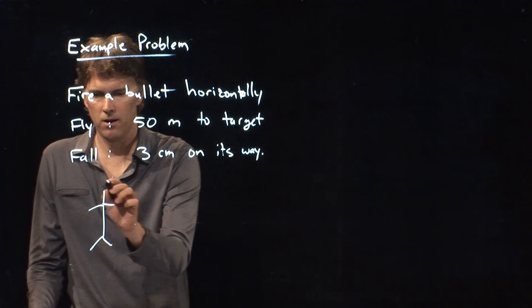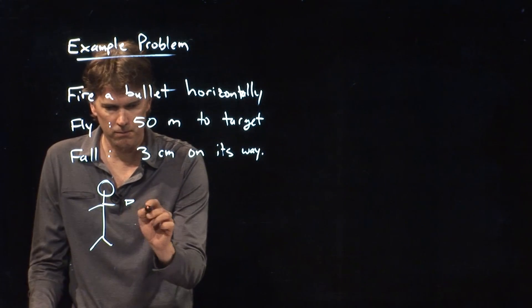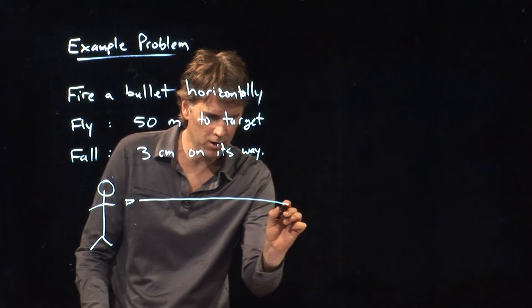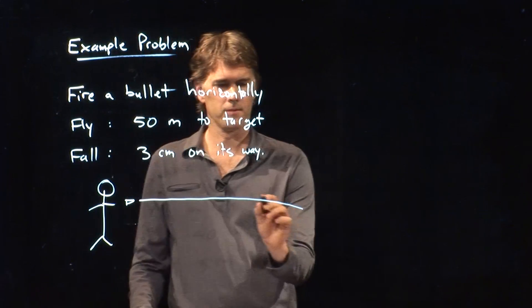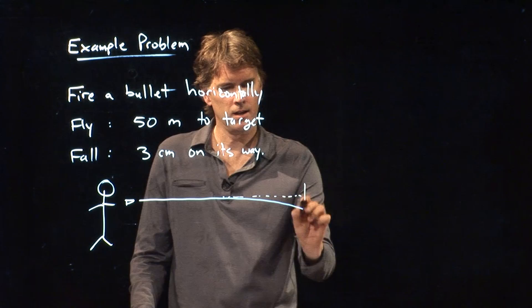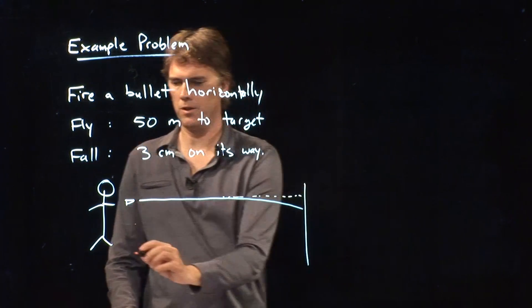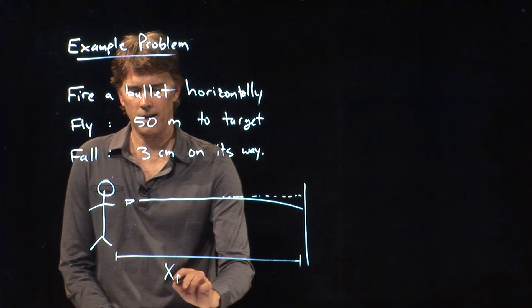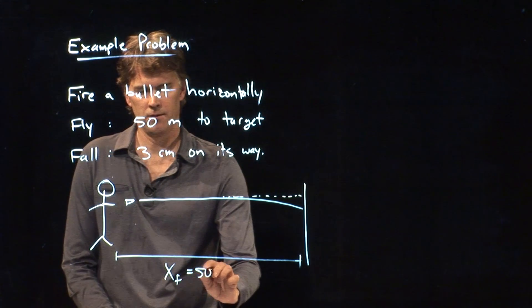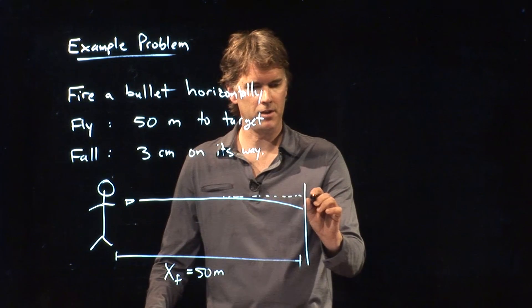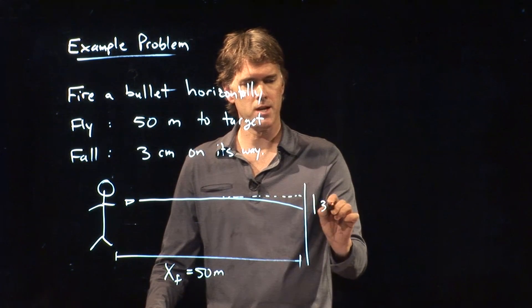Here you are. You've got your bullet that is launched horizontally, and it's just going to fall a little bit. So if we continue that horizontal line, it would look like that. So this distance here, we can call x final, is 50 meters, and this distance here is 3 centimeters.